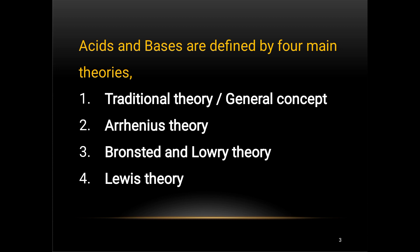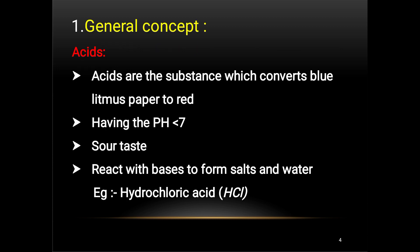Acids and bases are defined by four main theories: first, the traditional theory or general concept; second, Arrhenius theory; third, Bronsted-Lowry theory; and fourth, Lewis theory.